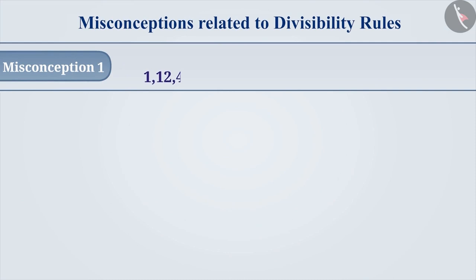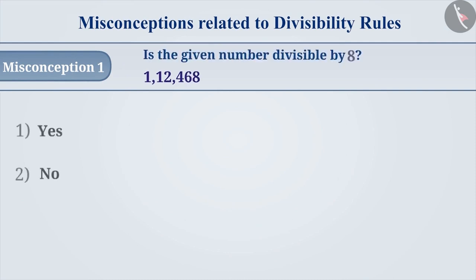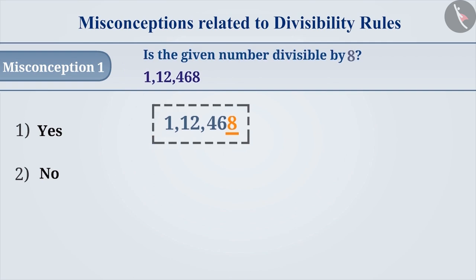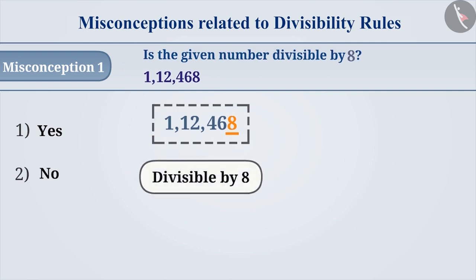First one: Is 1,12,468 divisible by 8? Sometimes, the divisibility of a number by another number is determined by considering only the last digit of that number. Since the last digit of the given number is 8, it is considered to be divisible by 8. And option 1 is an incorrect answer.